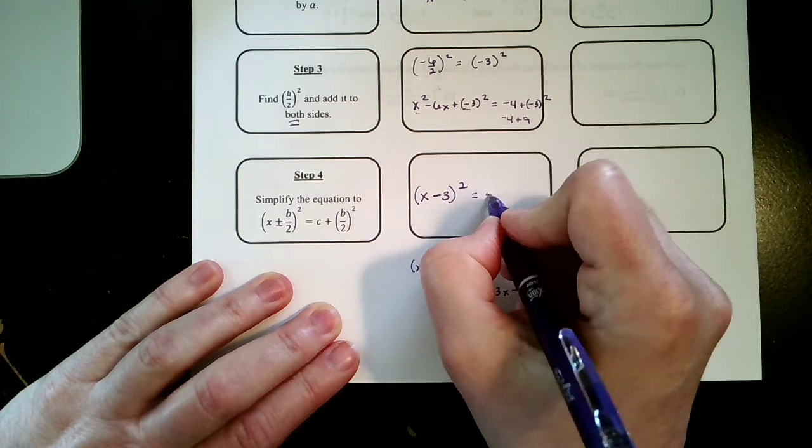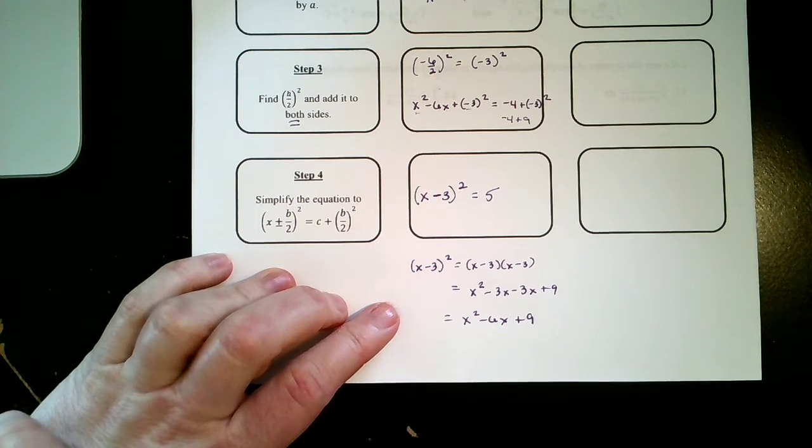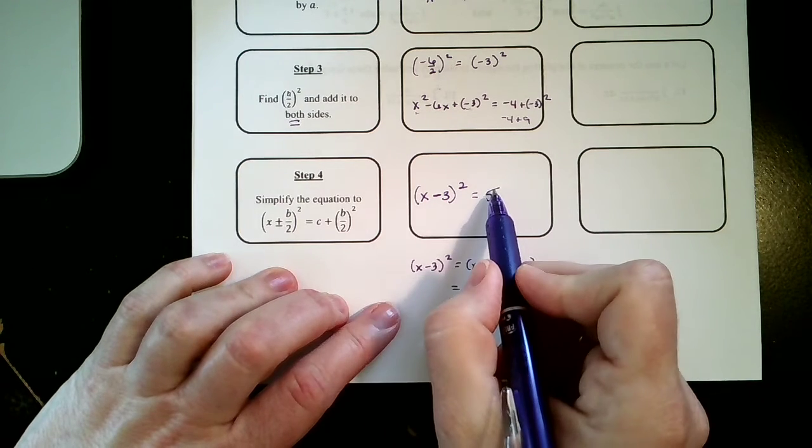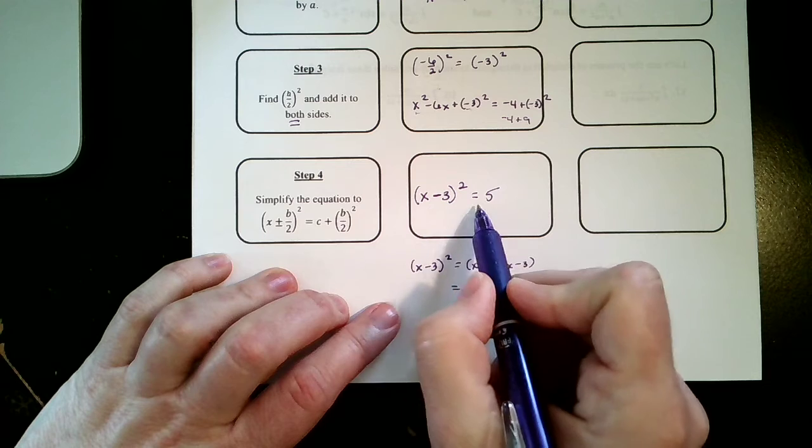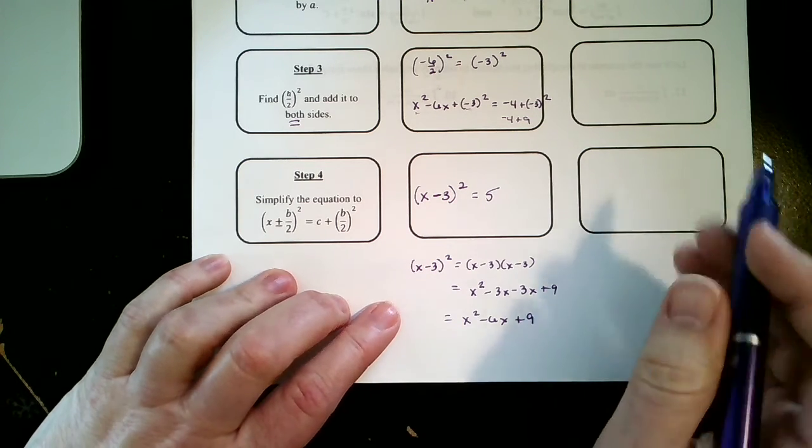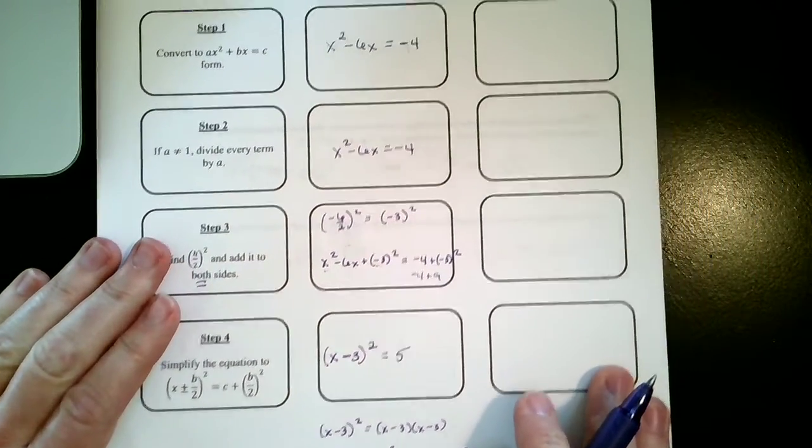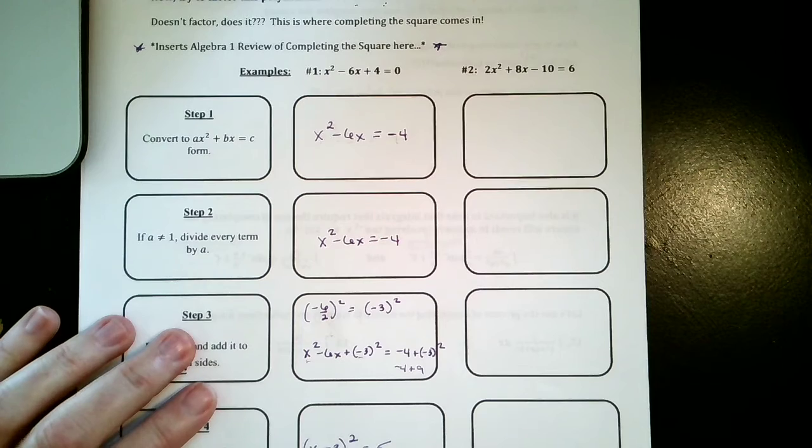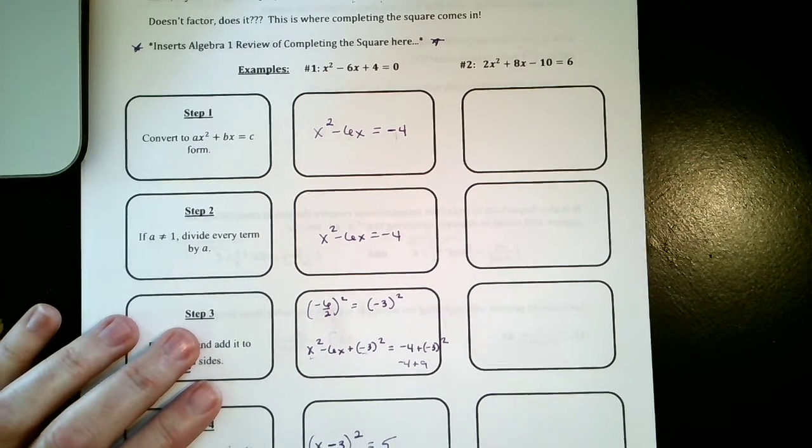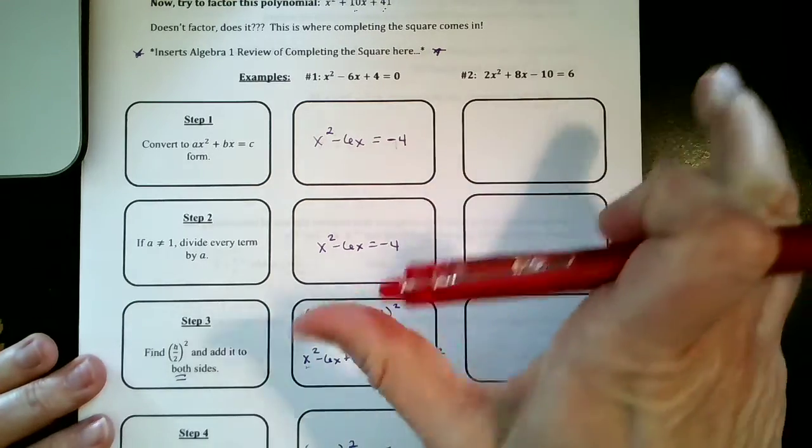Now if you were in algebra 1 or algebra 2 and you were using completing the square to solve it, you would square root both sides, you would get x - 3 = ±√5, and you would add 3 and you would have your x-intercepts.